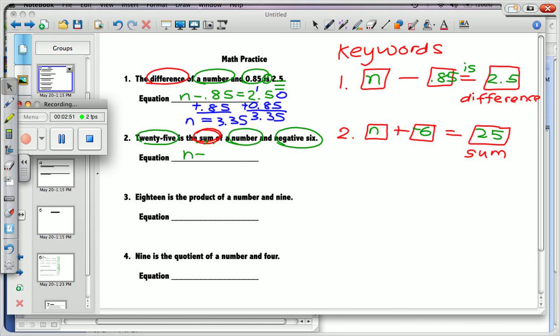n plus negative 6 is 25. The opposite of adding is subtracting. So I will subtract negative 6 from both sides. This makes a 0 pair after I do my sign changes. Negative 6, positive 6. That makes 0. 25 plus 6 makes 31. n is 31. Questions on that guy so far? Are we doing okay?